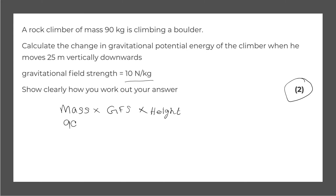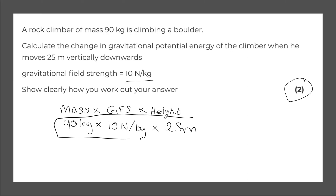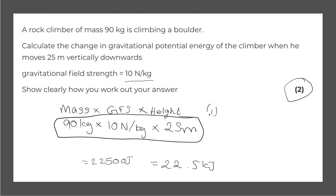Mass is 90 kilograms, multiplied by the gravitational field strength of 10 newtons per kg, multiplied by the height of 25 meters. They're all in the correct units, so we input this into the calculator: 90 × 10 × 25 gives us 22,500 joules. Writing this in kilojoules, it would be 22.5 kilojoules. One mark for the working out and one mark for the correct answer gives the full two marks.